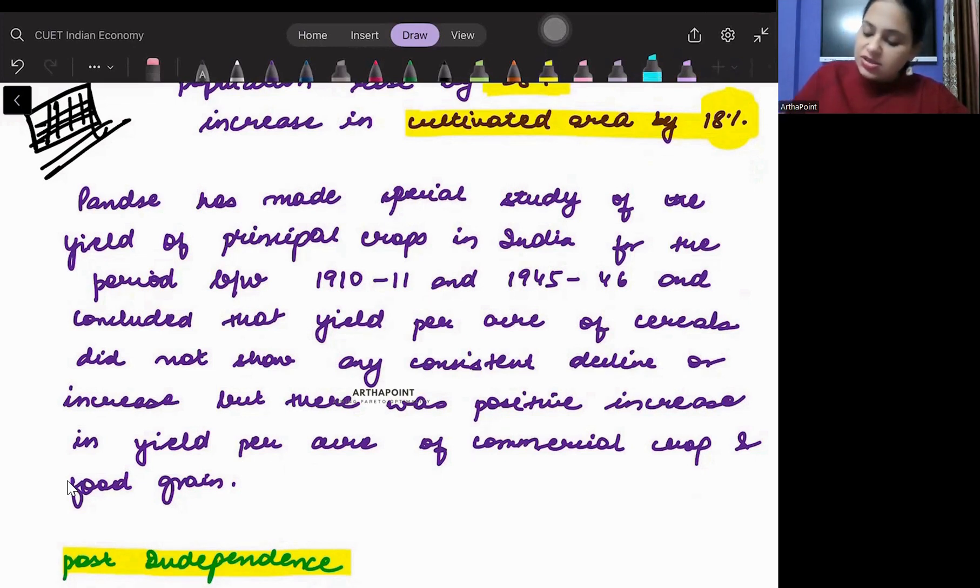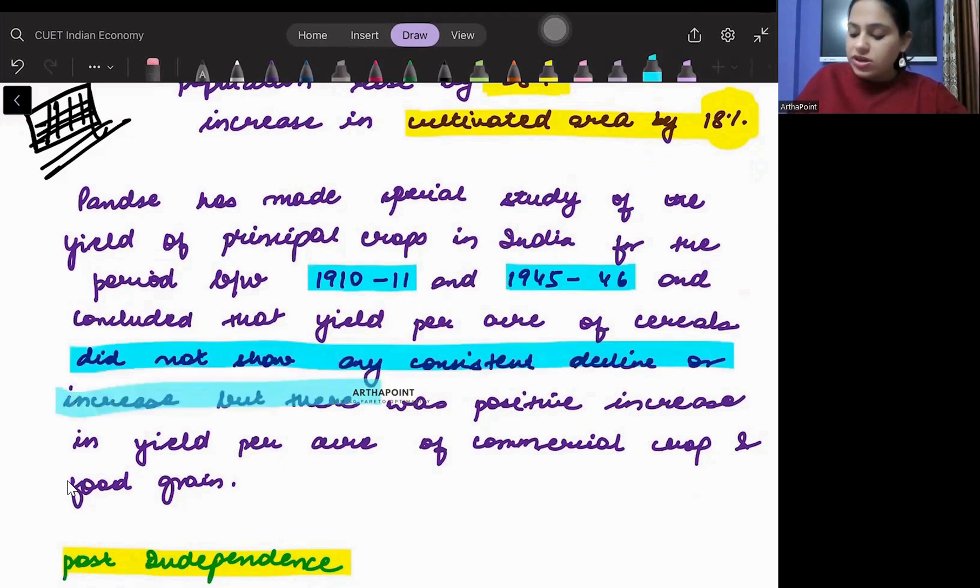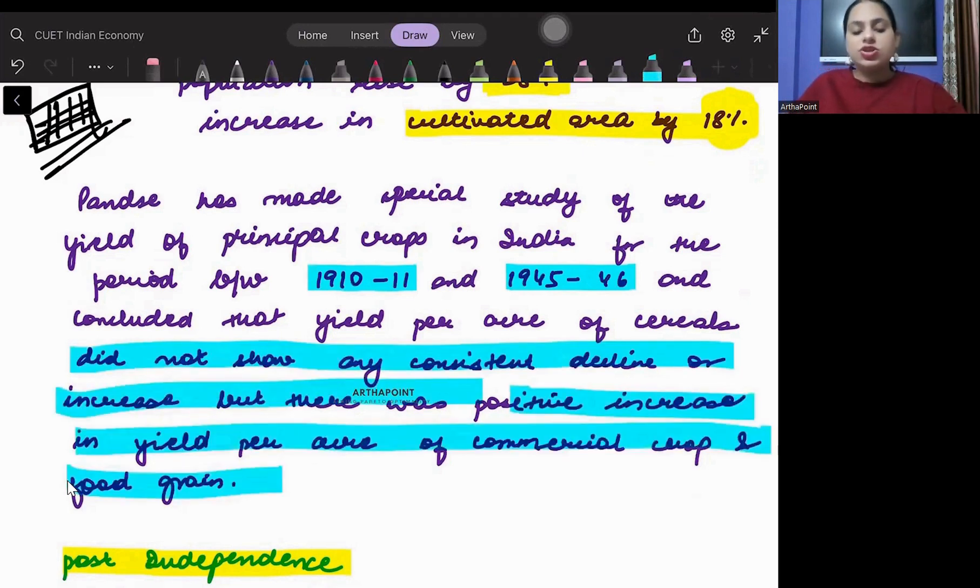Between 1910-11 and 1945-46, we see that there is no consistent decline or increase, but positive increase in yield per acre of the commercial crops and food grains.